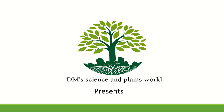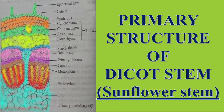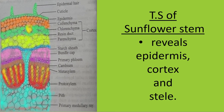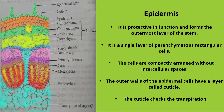DM Science and Plants World presents the primary structure of a dicot stem. An example of a dicot is sunflower. The transverse section of the sunflower stem reveals three main regions: epidermis, cortex, and the stelar region.